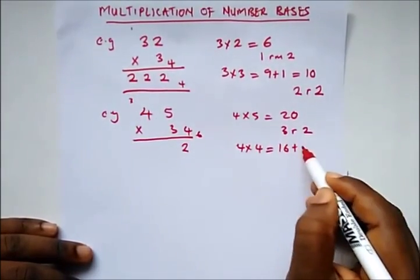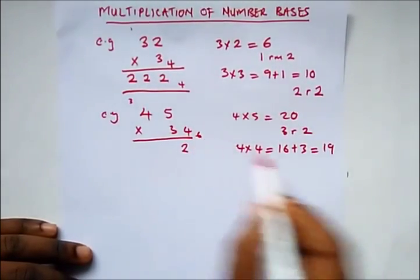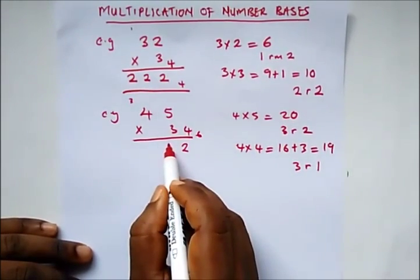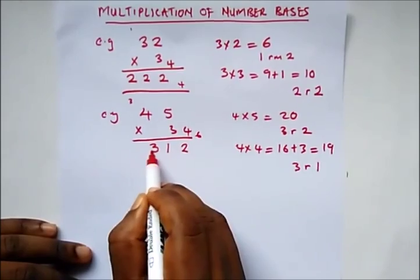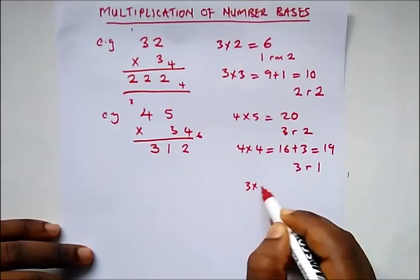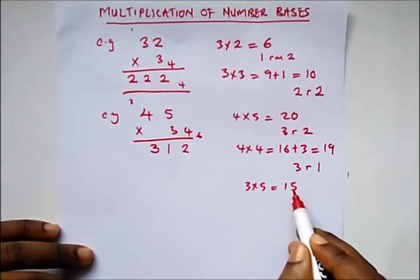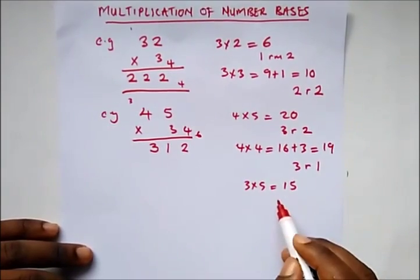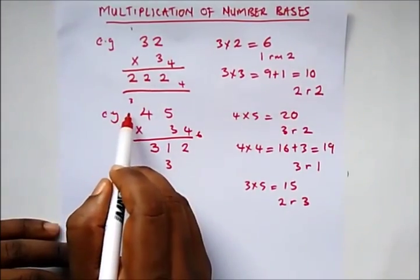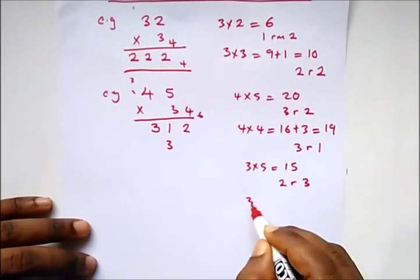Remembering our carry of 3, 16 plus 3 gives us 19. How many times would 6 go into 19? It goes 3 times remainder 1 — write down your 1 and carry 3. Then 3 times 5 gives us 15. How many times would 6 go into 15? It goes 2 times remainder 3 — write down your 3 and carry 2.